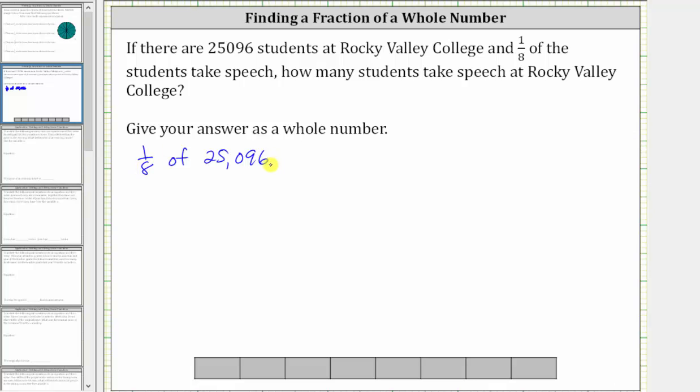To determine a fraction of a number, we multiply. Therefore, one-eighth of 25,096 is equal to one-eighth times 25,096.